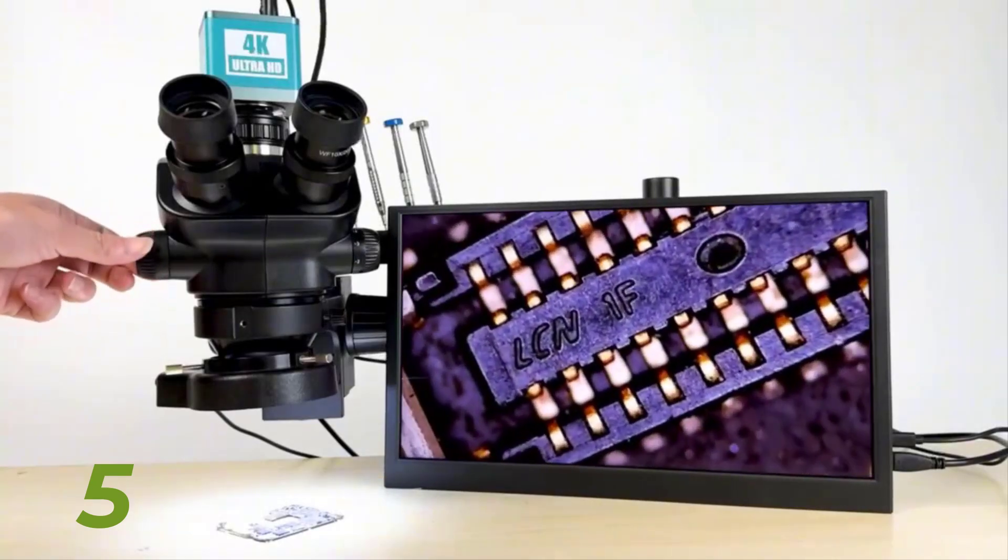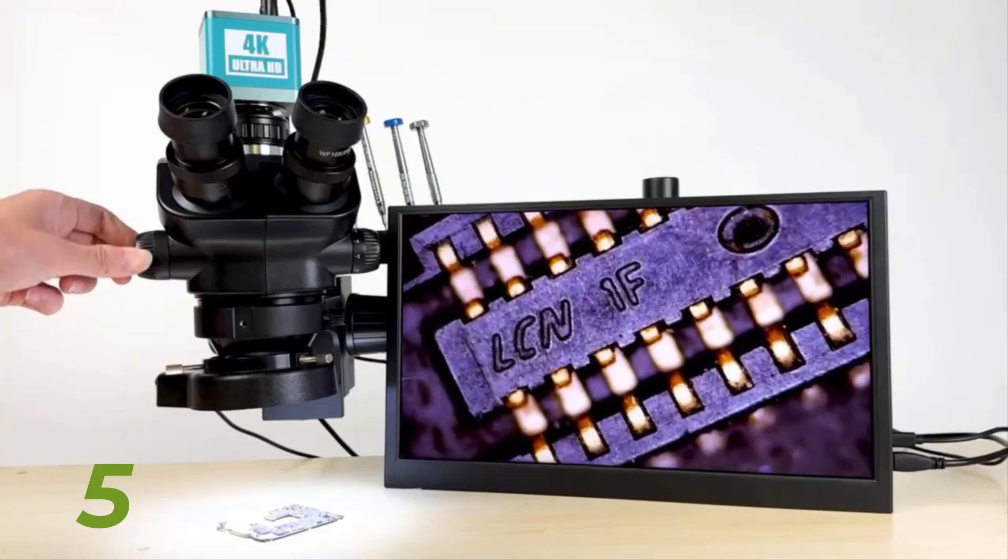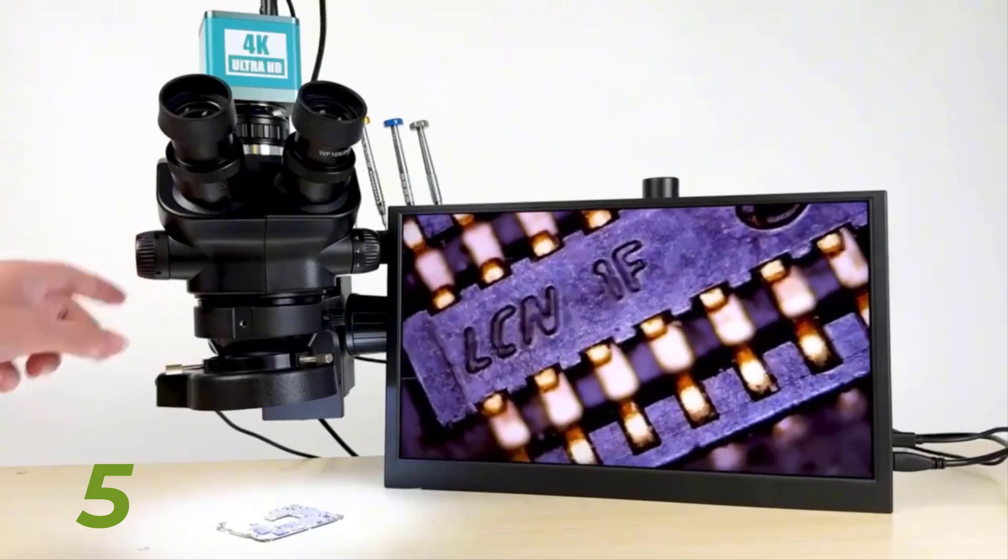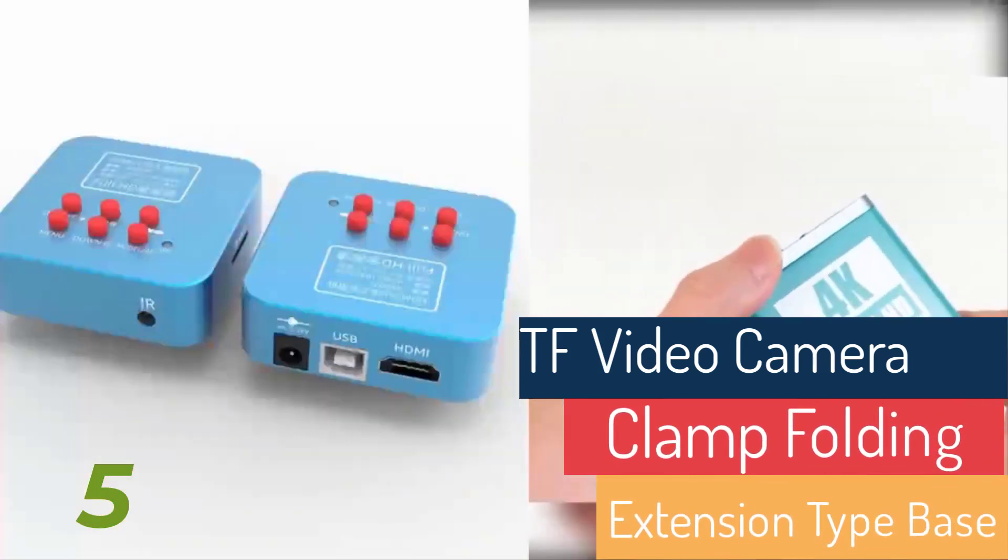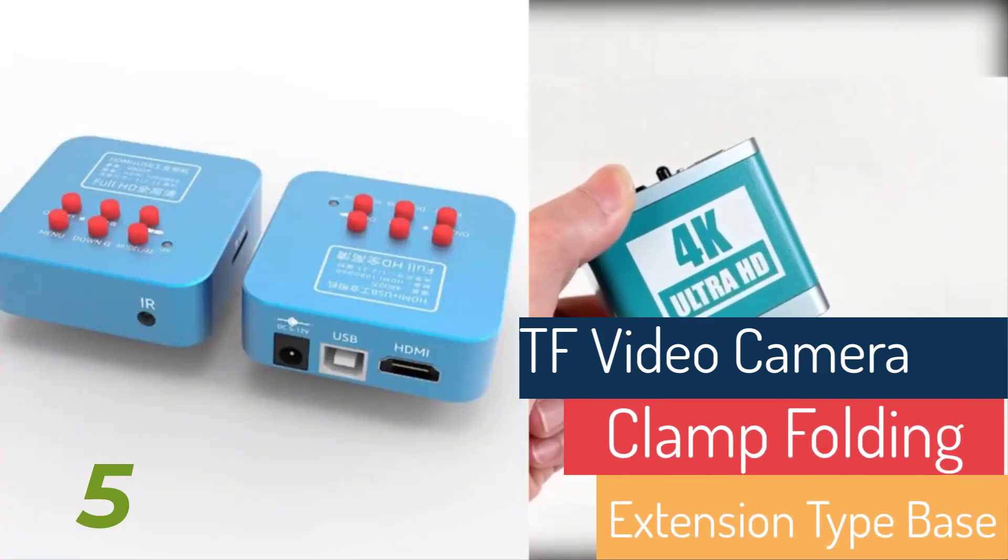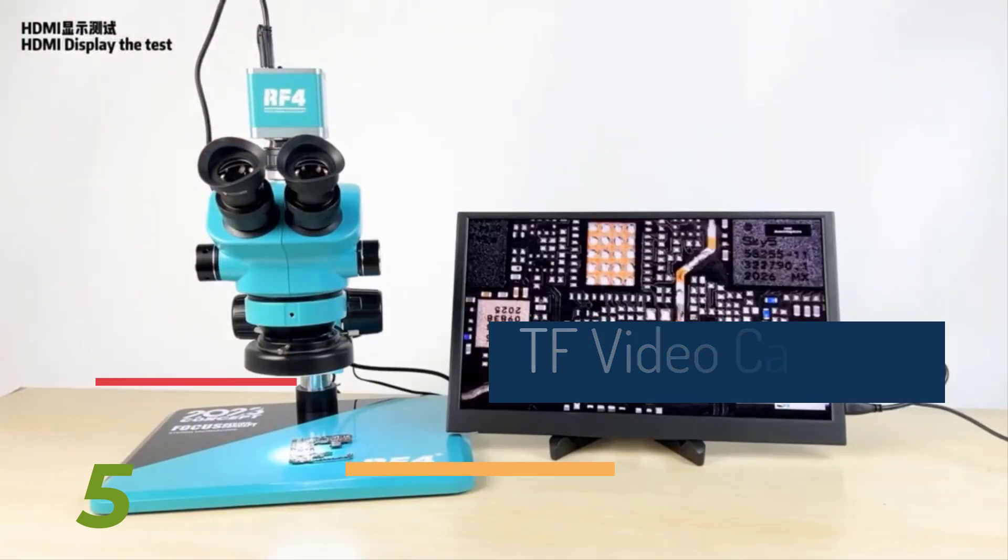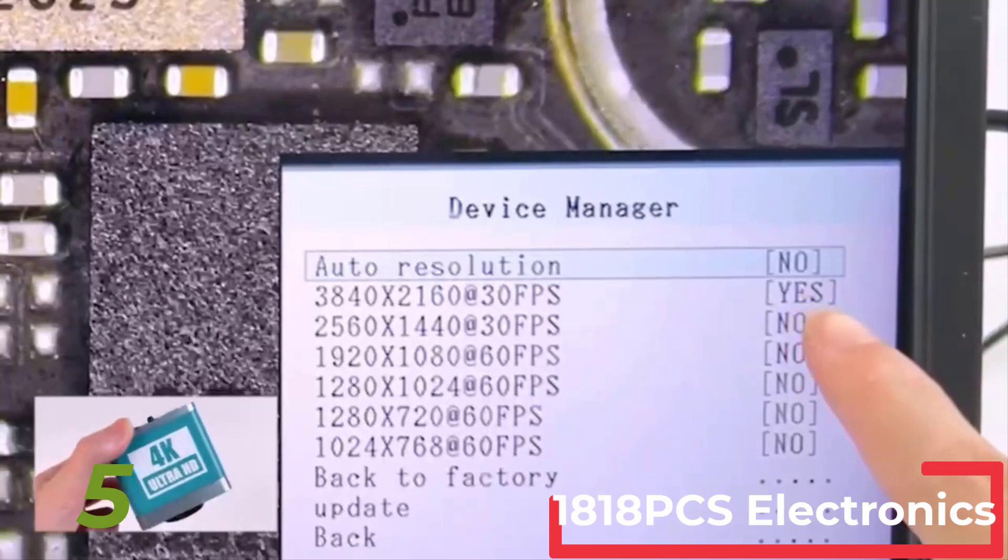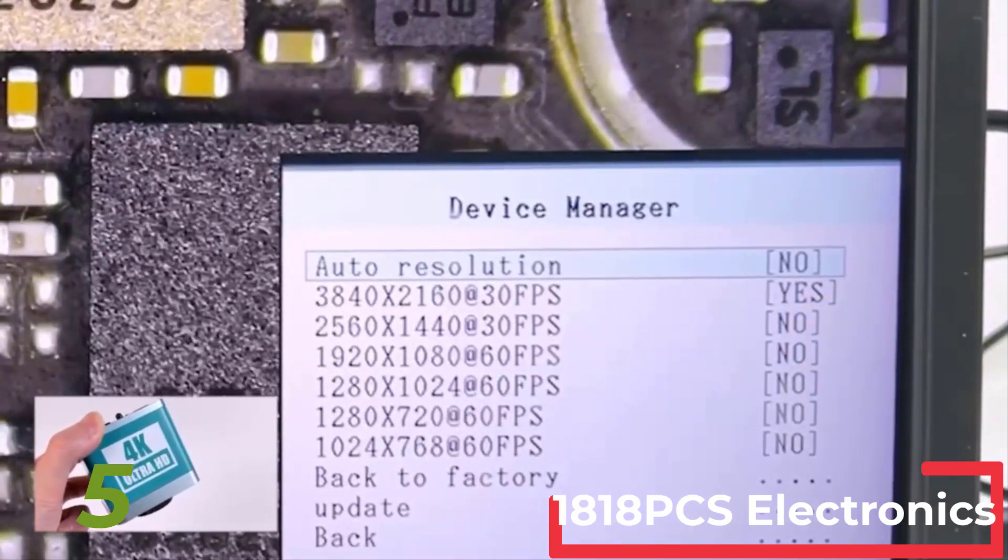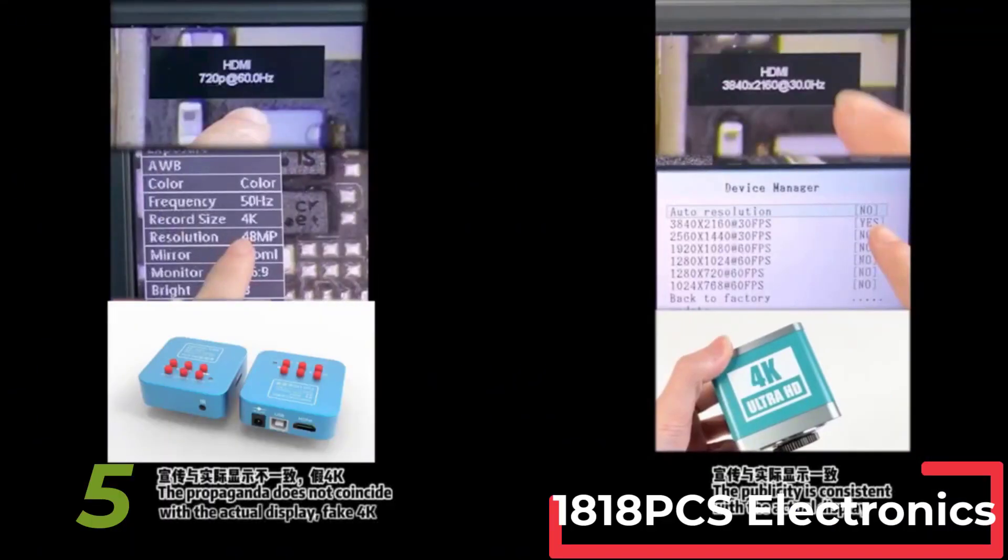This versatile microscope set is ideal for a wide range of applications: biological sciences including zoology, botany, entomology, histology, mineralogy, archaeology, geology, and dermatology; textile industry for inspection of raw materials and fabric quality; electronics industry for soldering, mobile phone repair, watch maintenance, and inspection of electronic components; and accessory inspection including jewelry and diamonds.